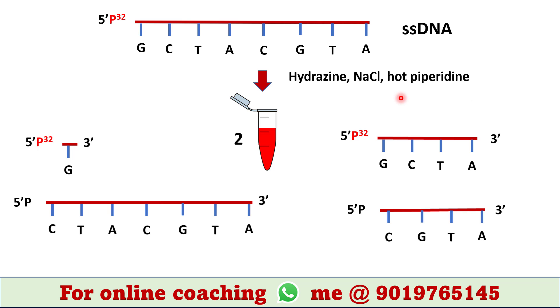These chemicals cleave DNA sequence at cytosine. Hence, following fragments are generated in tube 2.